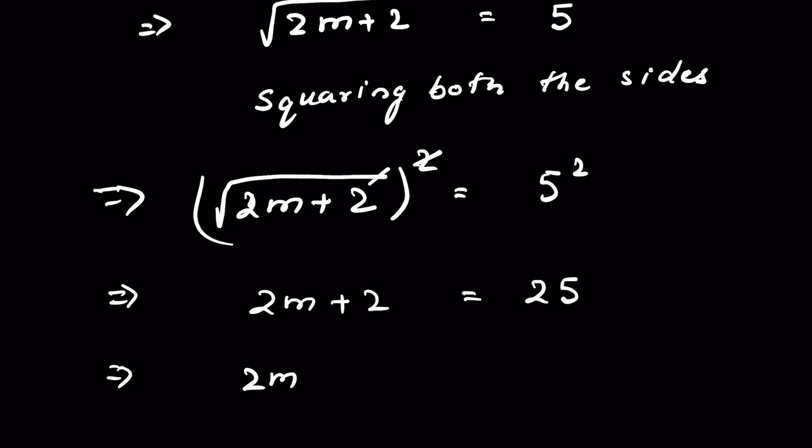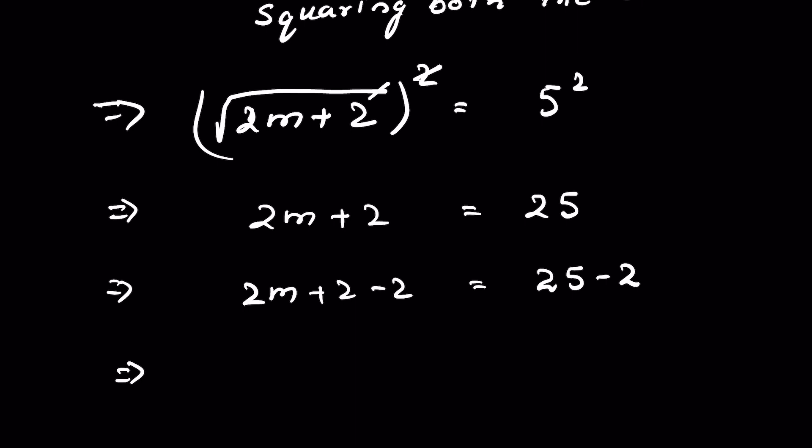Subtract 2 from both sides. This is called reciprocal action, and we do the same thing on the right hand side to balance the equation. So 2m equals 23.